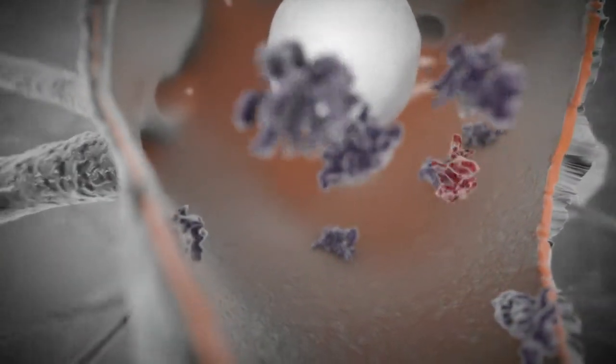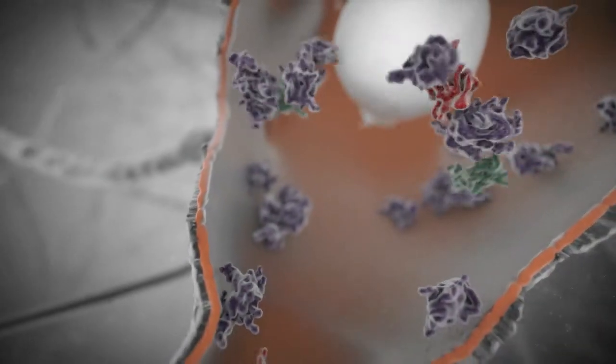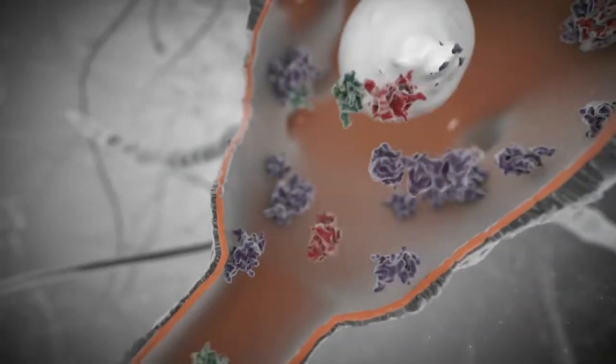In ALS, proteins accumulate in large aggregates. These aggregates prevent proteins from localizing to that part of the motor neuron where they normally function.